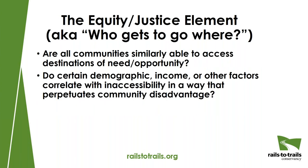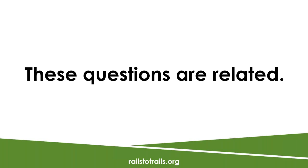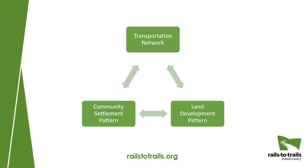The opposite is the place where placemaking and economic development have encouraged mixed-use scenarios with lots of destinations and lots of origins in close proximity. So the land use component is just as important to whether functional trips can occur as the transportation element. And finally, the equity element: who gets to go where? Are all communities and all people similarly able to access destinations of need or opportunity? And are certain demographic factors correlated with inaccessibility over time in a way that community disadvantage is perpetuated?